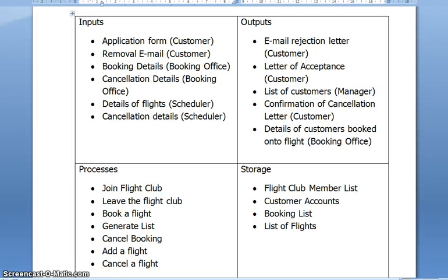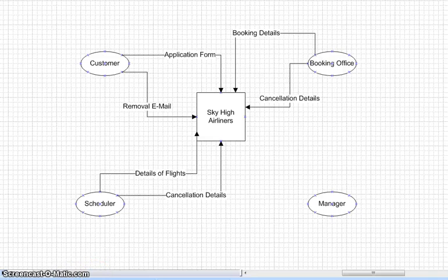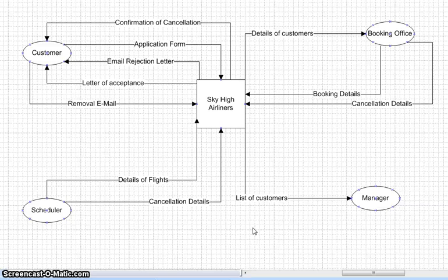Looking back at the IPSO chart, to the customer we've got an email rejection letter, letter of acceptance, and confirmation of cancellation letter. That's that diagram finished off — that is a context diagram, or a level zero diagram, for Sky High Airliners.